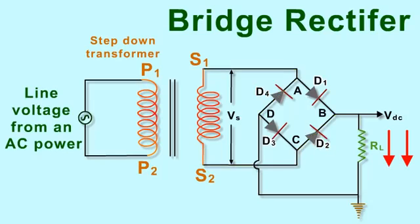The same process is repeated for subsequent half cycles. It can be seen that current flows through RL in the same direction during both half cycles of the input AC signals.